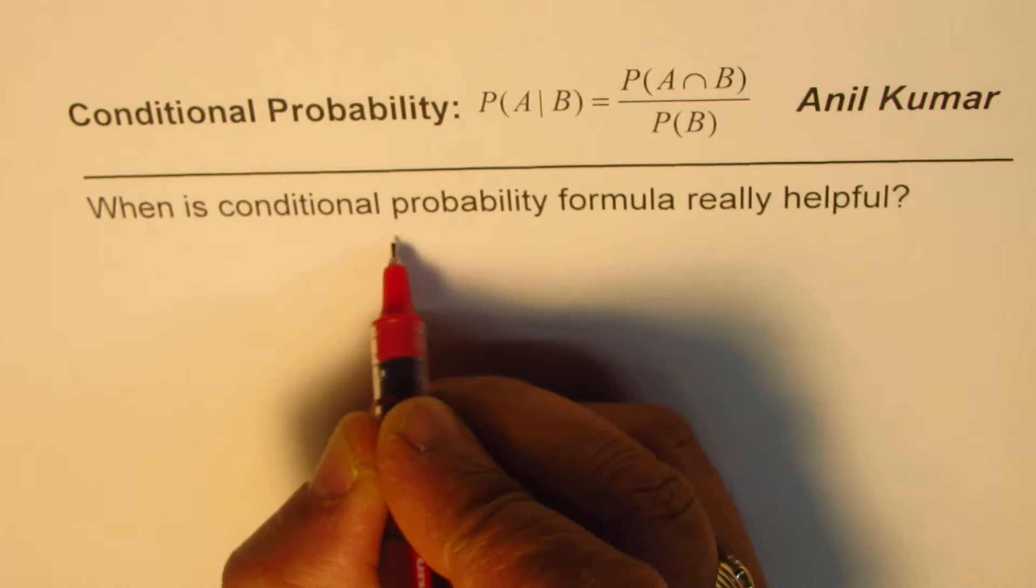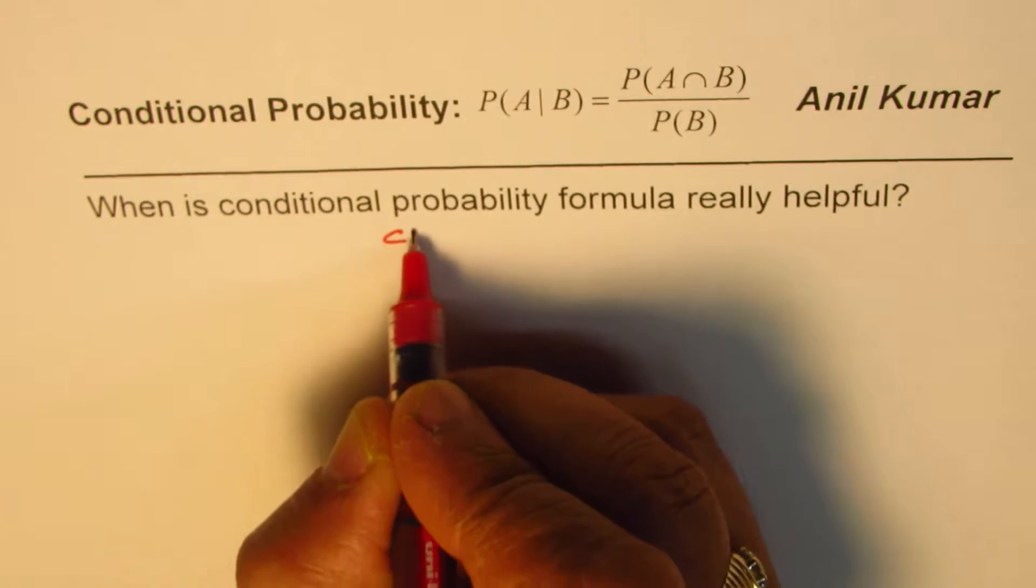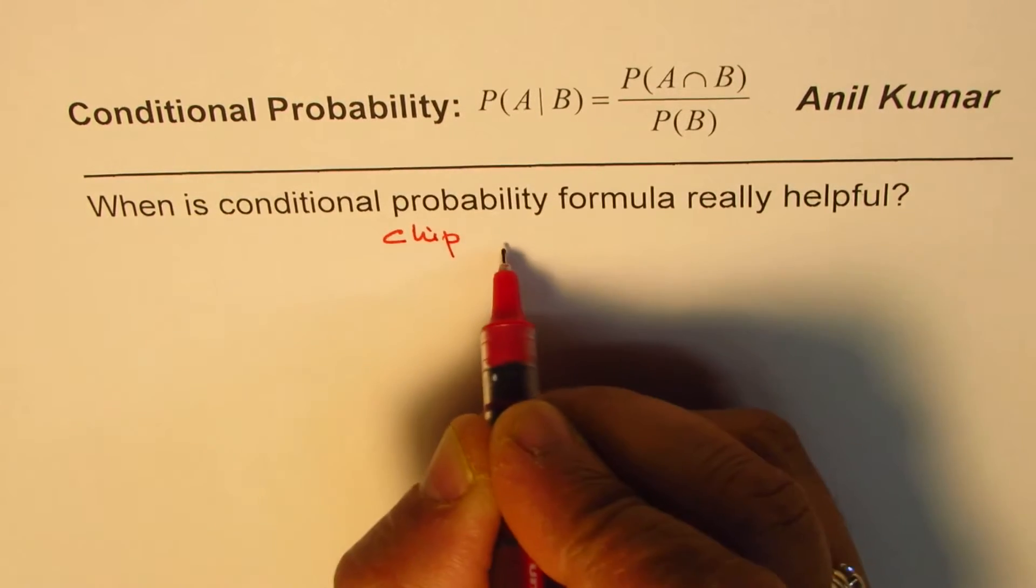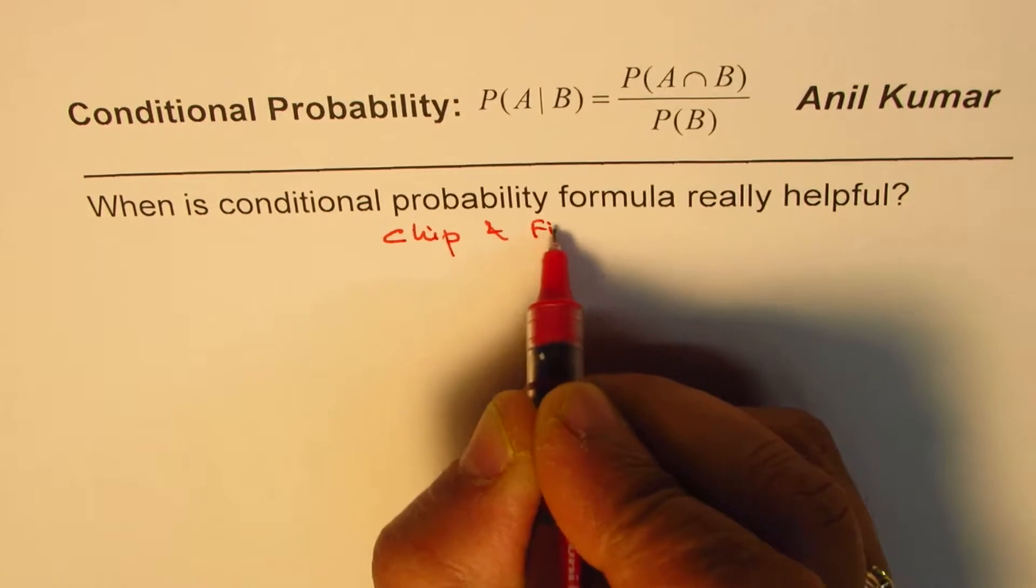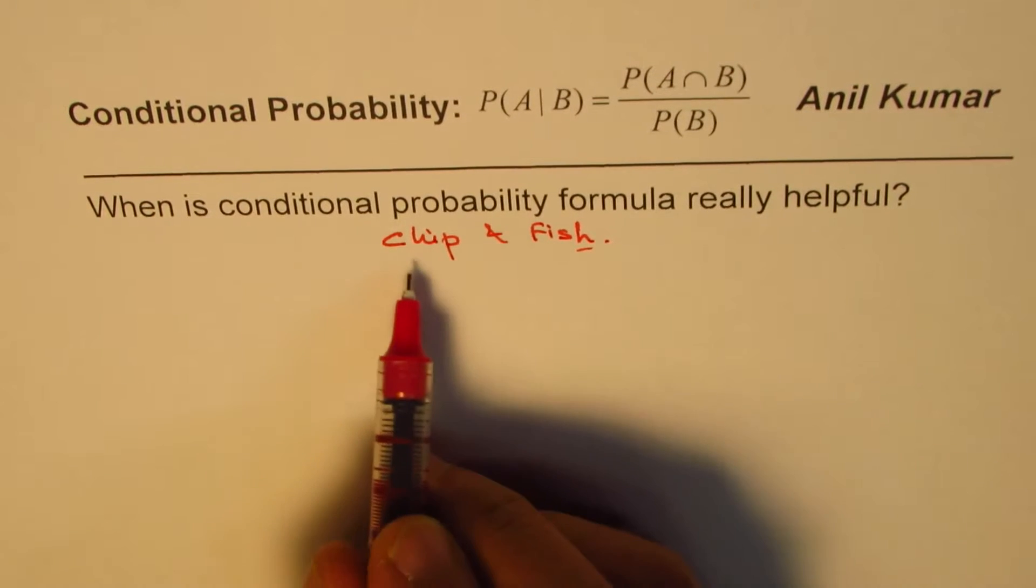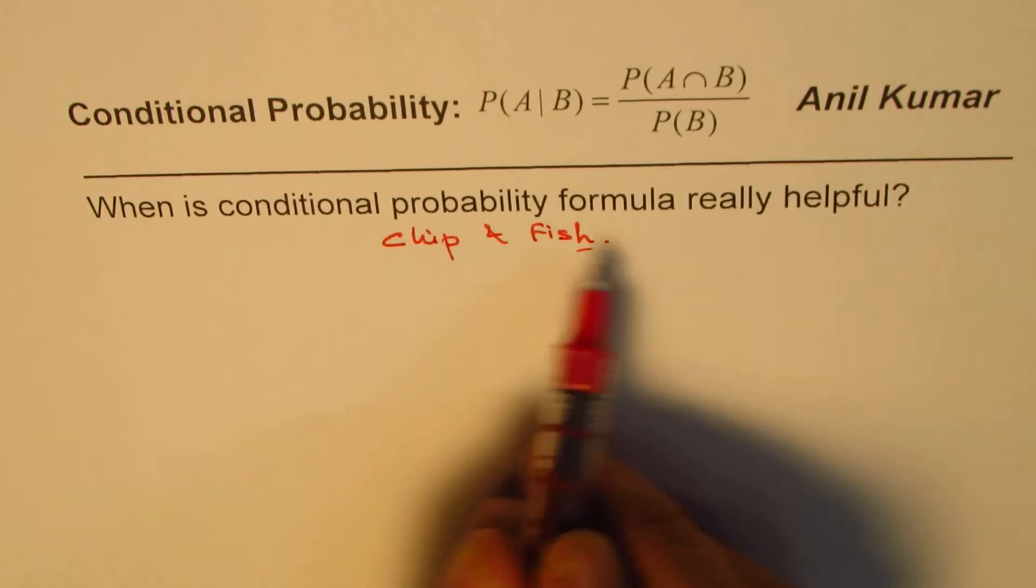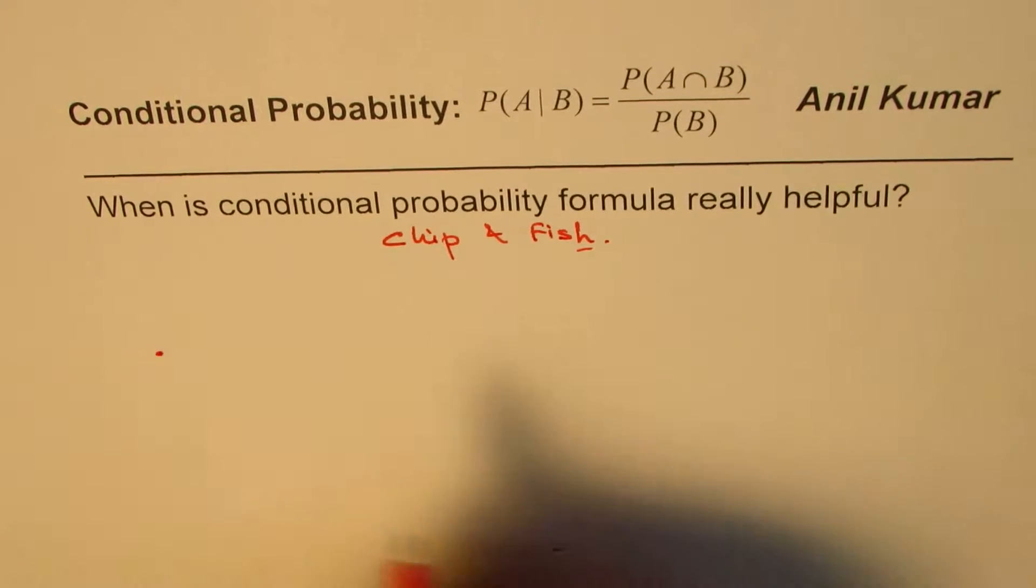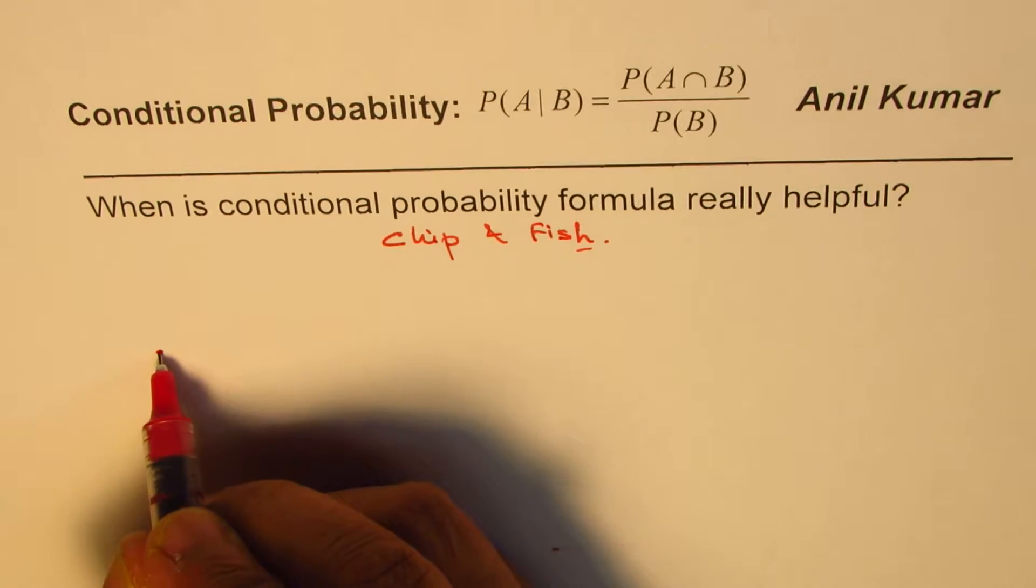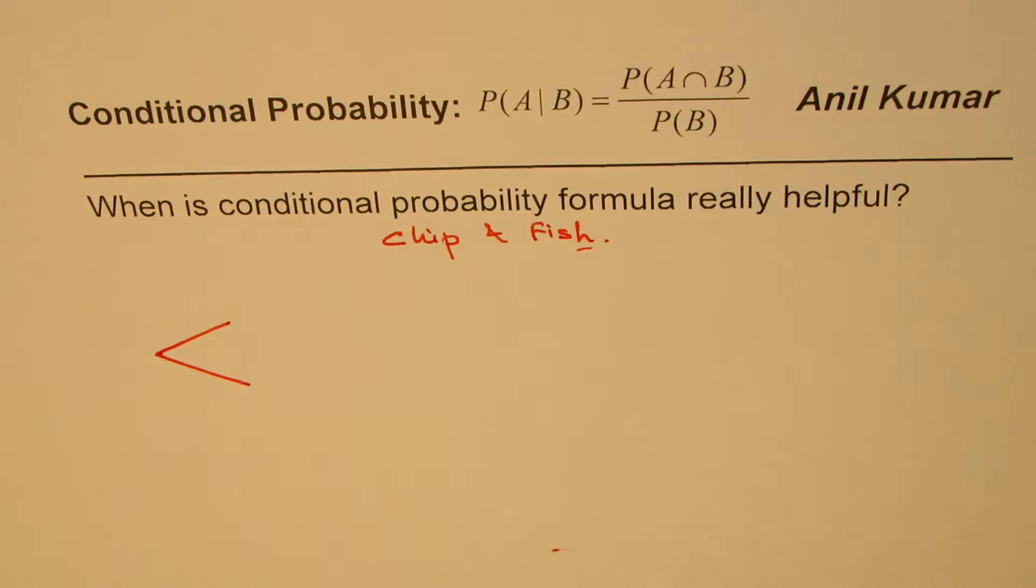Let us say we have a restaurant which is very famous for chip and fish or fish and chip as you may say. So fish, I think, is primary here. Anyway, so we are calling it chip and fish. Now, in this restaurant, most of the persons who visit this restaurant, they will order for fish for sure.